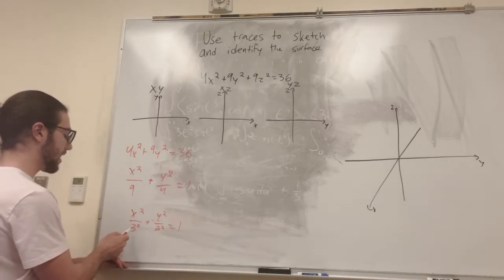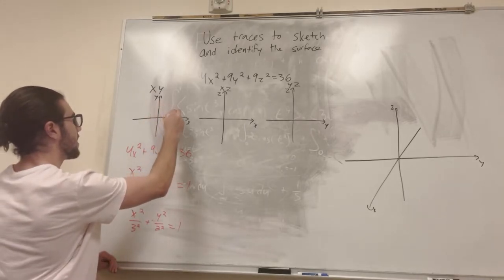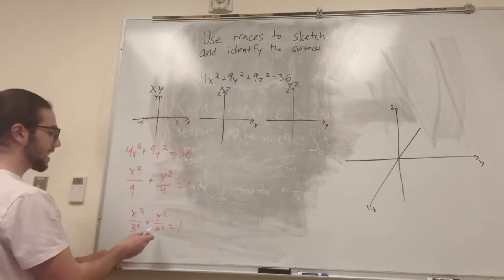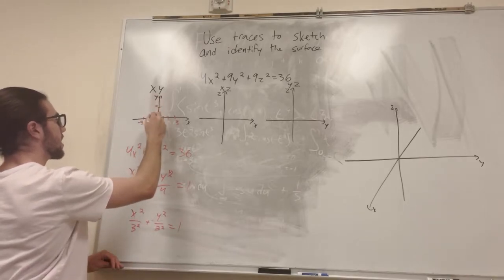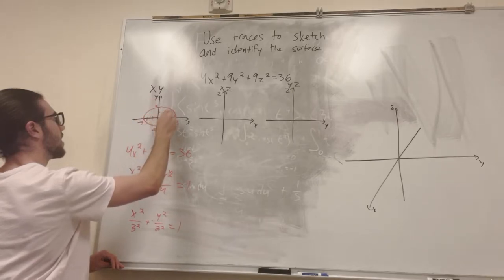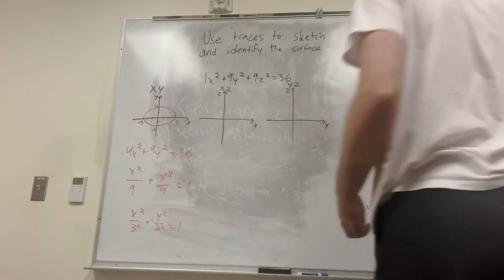And now what we can see here is because x squared is over 3 squared, the x intercepts are going to be at 3 and negative 3. So this is where it's going to intercept the x-axis. And same thing for y, it's going to be at 2 and negative 2. So this is what our thing is going to look like on the xy plane. Okay, so we have an ellipse.